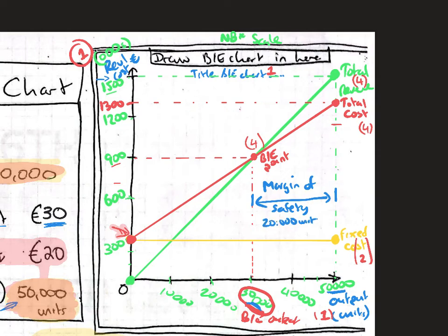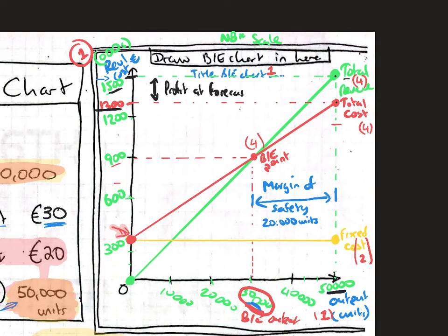I like to put 20,000 units on the graph to show the examiner you understand the margin of safety. For profit at forecast output: at 50,000 units, total cost is €1.3 million and total revenue is €1.5 million. The difference between total revenue and total cost is your profit at forecast output, which in this case is €200,000. Show this as the gap between the two dotted lines at 50,000 units.